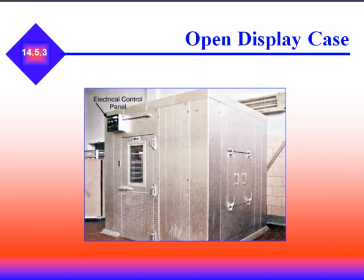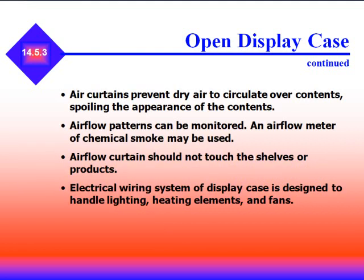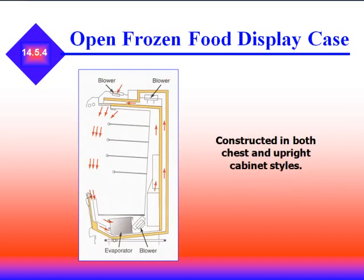This is an example of an open display case, often used in produce and kept at about 40°F at very high humidity. Air curtains prevent dry air from circulating over the contents and spoiling their appearance. Airflow patterns can be monitored using an airflow meter or chemical smoke. Airflow curtains should not touch the shelves or products. The electrical wiring system of display cases is designed to handle lighting, heating elements, and fans. The goal is to maintain the air curtain across the front of the case.